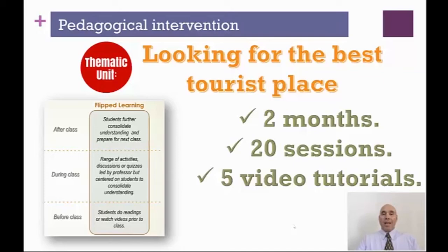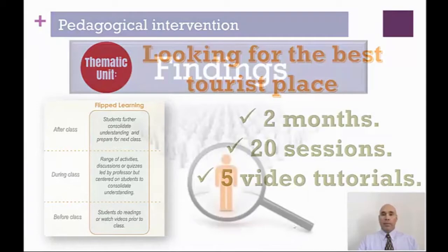The task was looking for the best tourist place. Students accessed information through listening and reading activities via the video tutorials, collected this information, and needed to learn how to compare different places to determine the best tourist destination for travel. The implementation spanned two months, twenty sessions, and five video tutorials through flipped learning — students watched videos and did readings before class; during class they participated in activities, discussions, and quizzes led by the professor but centered on students to consolidate understanding; and after class they completed consolidation and prepared for the next session.